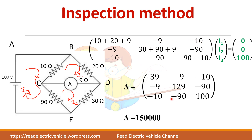Find the determinant of this matrix. You can verify that the diagonal elements are positive and the off-diagonal elements are negative and symmetric. Using the inspection method makes it easy to identify any mistakes.